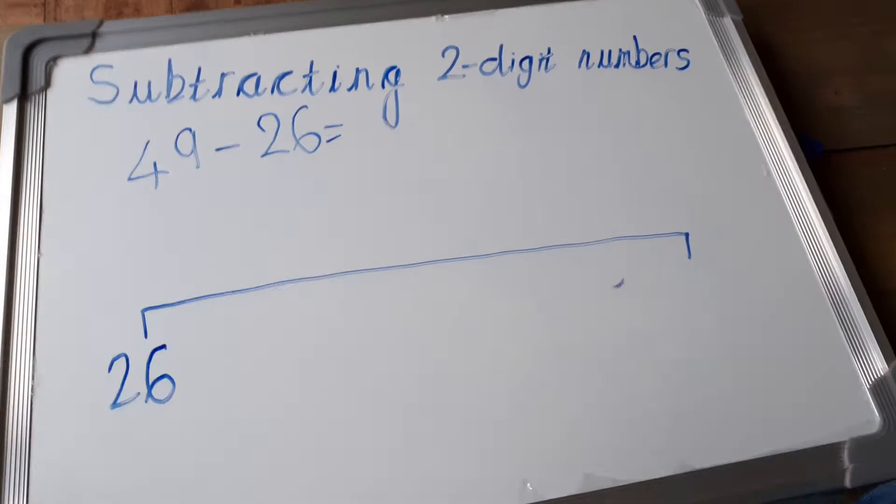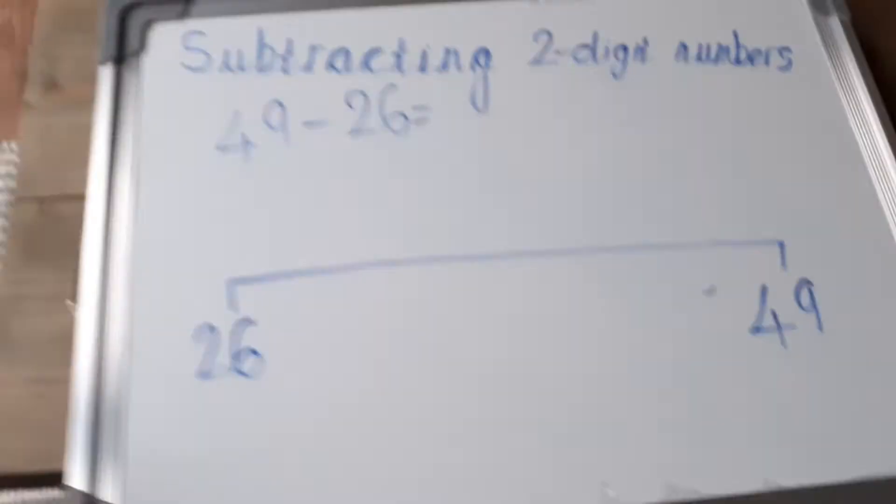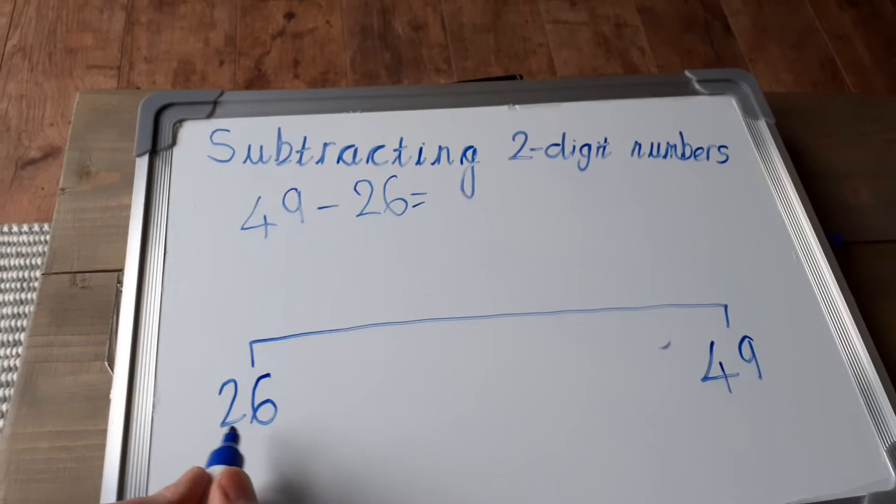And our big number, 49, goes at the end of the number line, just over there. Okay, and we need to find the difference between 49 and 26. So we'll start with 26, and we'll get to our next multiple of 10, which is 4, because 6 add 4 makes 10.